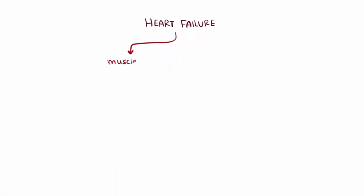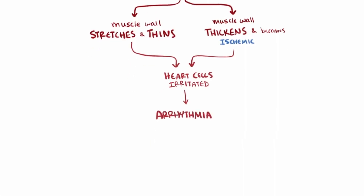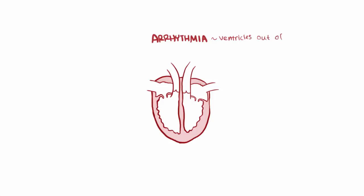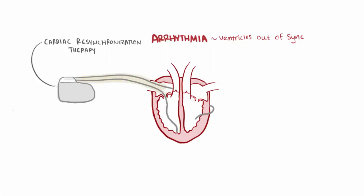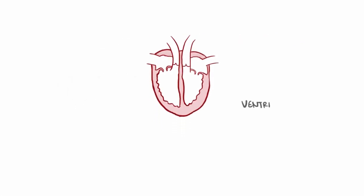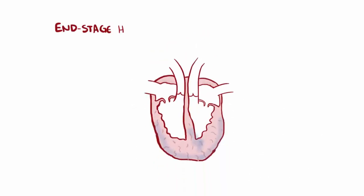With heart failure, sometimes the muscle wall can stretch and thin out, or sometimes it can thicken and become ischemic. In either case, those heart cells get irritated and this can lead to heart arrhythmias. With an arrhythmia, the ventricles don't contract in sync anymore, making them less able to pump blood out and worsening the situation. In some cases, patients might be prescribed cardiac resynchronization therapy pacemakers, which can stimulate the ventricles to contract at the same time and potentially improve blood pumped out. Alternatively, some people might have ventricular assist devices, or VADs, implanted, which literally assist the heart in pumping blood. In end-stage situations where other forms of treatment have failed, patients might have a heart transplant.